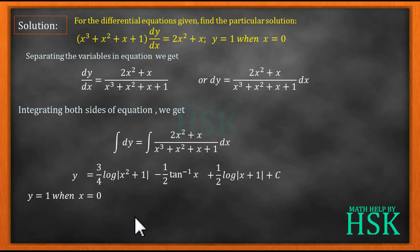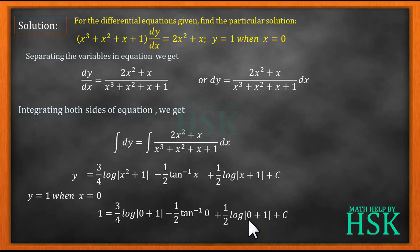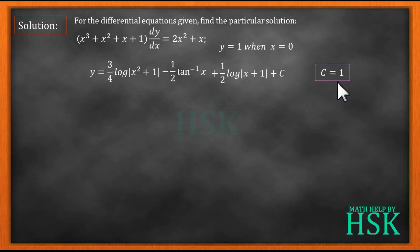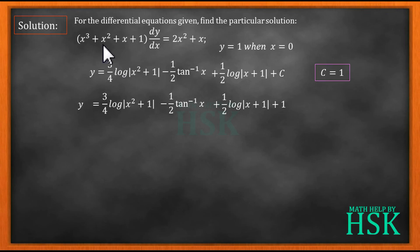Substituting y = 1 and x = 0: 1 = 3/4 · log(1) − 1/2 · tan⁻¹(0) + 1/2 · log(1) + C. Since tan⁻¹(0) = 0 and log(1) = 0, all three terms vanish, giving 1 = C, so C = 1. Placing this value back, the particular solution of the given differential equation is y = 3/4 log(x²+1) − 1/2 tan⁻¹(x) + 1/2 log|x+1| + 1.